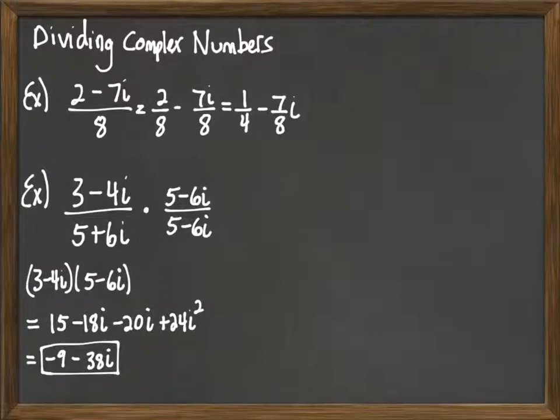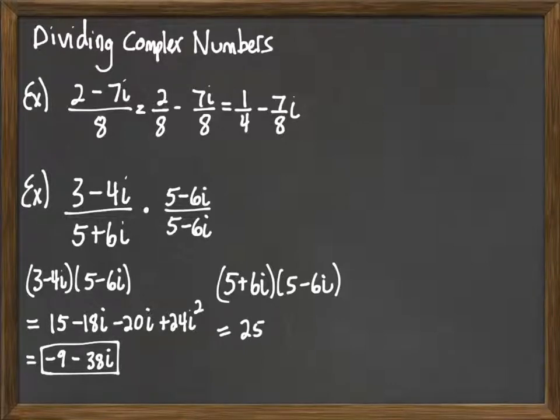And so then we go to the bottom: 5 plus 6i and 5 minus 6i. We multiply those out. That's going to be a difference of squares. So 5 times 5 is 25. 6 times 6 would be minus 36i squared. But remember, i squared is negative 1. So that's going to make that 25 plus 36. And add those up: 25 plus 36 is going to be 61. So that's going to be our denominator.